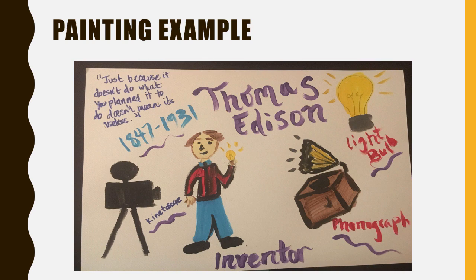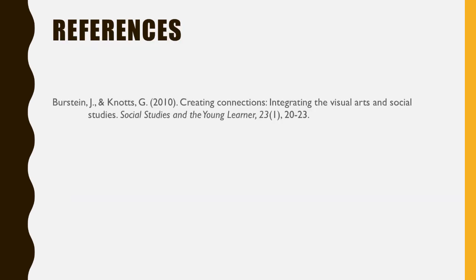So here is a painting example. The reason why I wanted to show this example is — clearly I am not an artist — but I did my painting to the best of my ability. You can clearly see my light bulb, you can tell I have Thomas Edison there, and you can see I took my time to create my inventions on my painting. I would show an example so that the students know what to expect. And I used this article, 'Creating Connections: Integrating the Visual Arts in Social Studies,' a peer-reviewed article where I found this idea of incorporating art into social studies. Thank you.